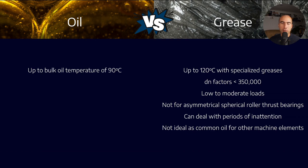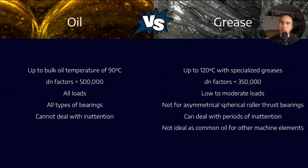With oils, we go up to bulk oil temperature of 90 degrees Celsius, higher with synthetics. DN factors are about 500,000. We can accommodate a wide load range with high viscosity oils, suitable for all bearing types. Oil doesn't deal well with inattention - oils take on environmental contaminants like dust and water because oils are hygroscopic, leading to corrosion. The advantage is that if bearings are part of a wider circulating system, you would use oil.